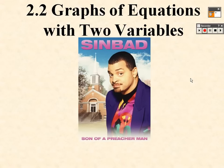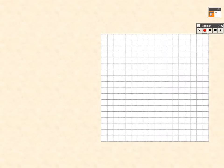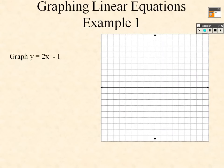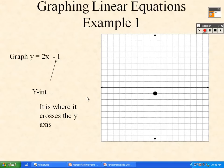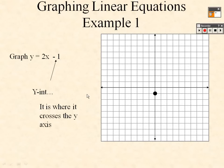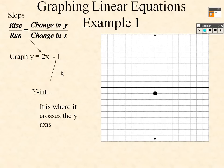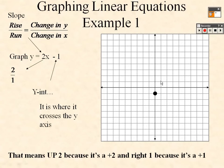We are in trig 2.2 — graphing equations with two variables. Example one is simply graphing y = 2x - 1. The y-intercept is negative 1, so we plot a point at negative 1 on the y-axis. The slope is 2 over 1, which means we go up 2 and over 1 to plot additional points, then connect them with a line.